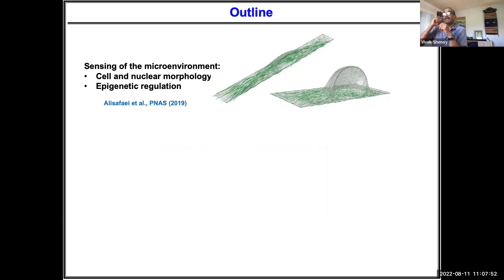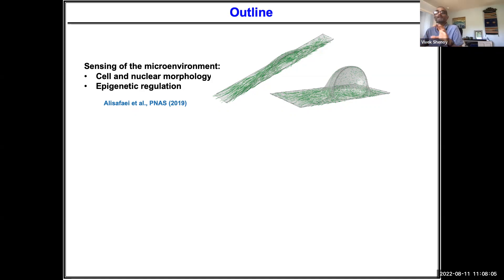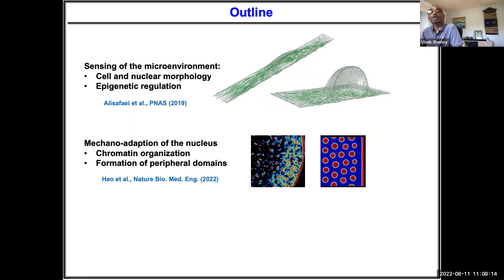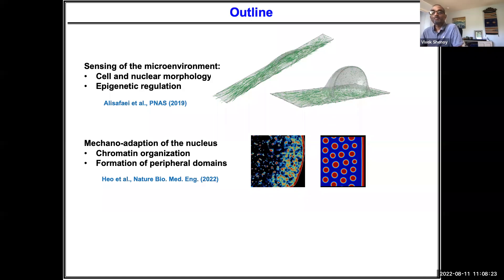A piece that's maybe less obvious is that contractility can also regulate epigenetic marks through shuttling of epigenetic regulators between the cytoplasm and the nucleus. We had looked at this a few years ago. What I want to talk about primarily is work appearing soon — we do have a preprint on the archive — where we image the nucleus using high-resolution techniques like STORM.